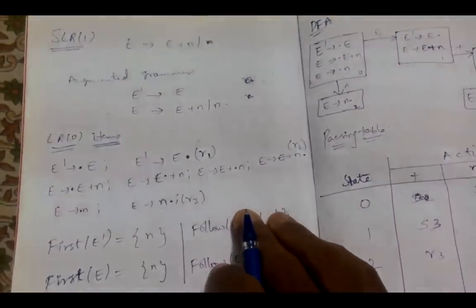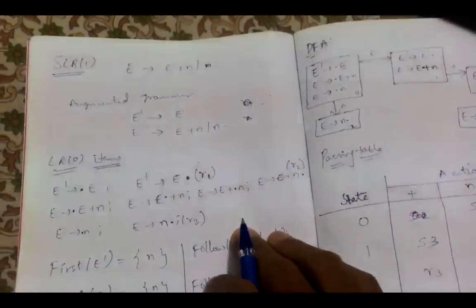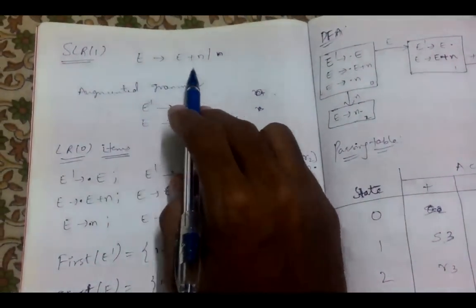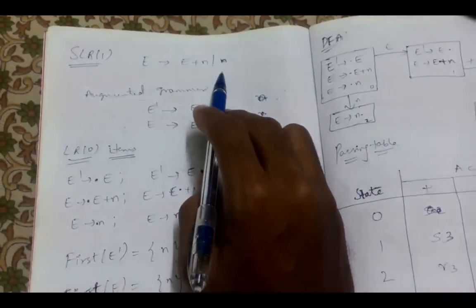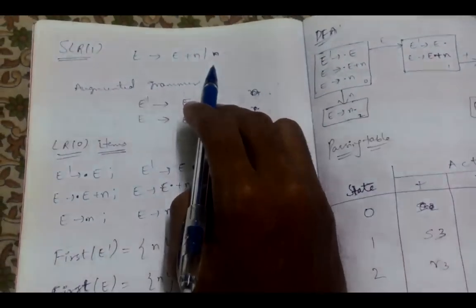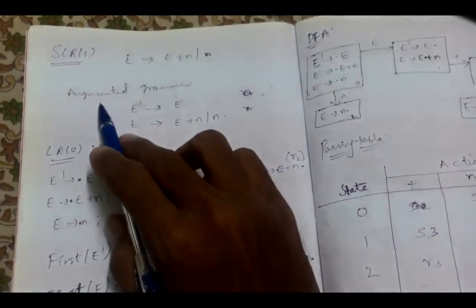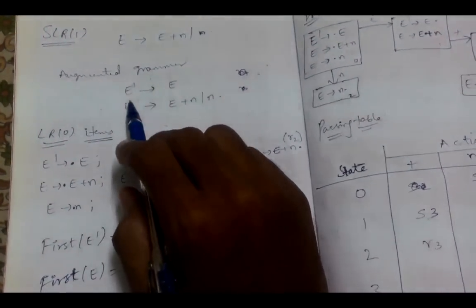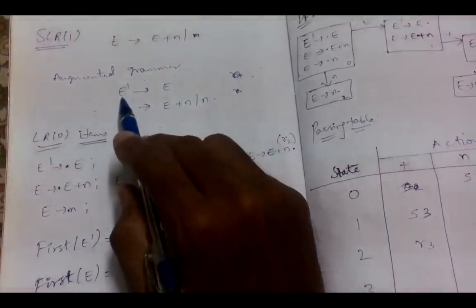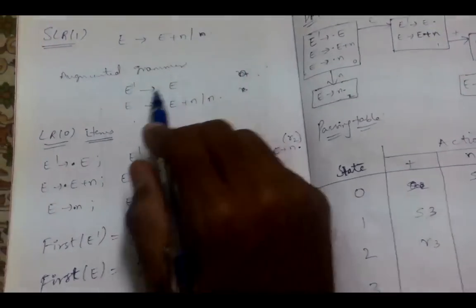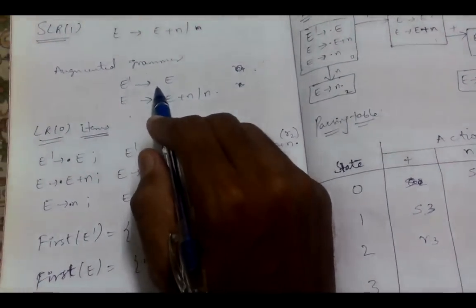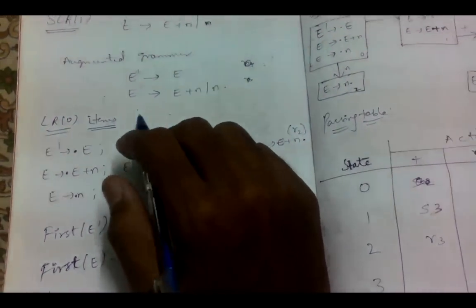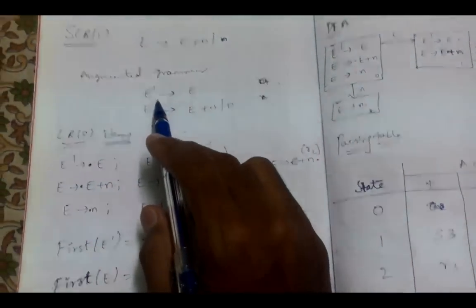Assalamu alaikum everyone. We will be looking at the SLR(1) parsing technique. We have been given a grammar: E → E + N | N. For this grammar we need to construct the SLR(1) table and then look for the input. First we need to convert this grammar into an augmented grammar. The augmented grammar consists of an extra production of the form E' → E, used to differentiate the start symbol used later in the DFA and parsing table.